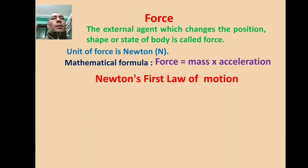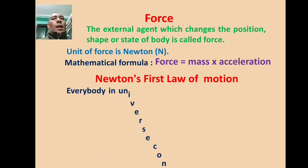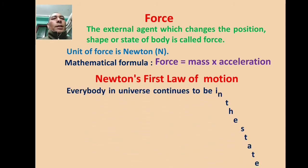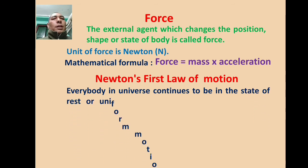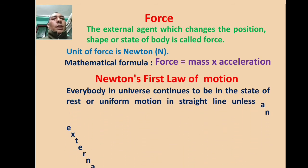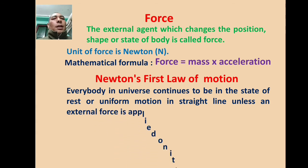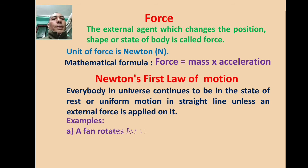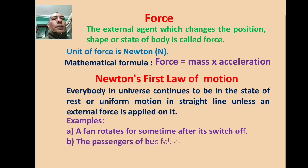Newton's First Law of Motion: Every body in the universe continues to be in a state of rest or uniform motion in a straight line unless an external force is applied on it. Example A: A fan rotates for some time after it is switched off. Example B: The passenger of a bus falls backward when the bus suddenly starts.